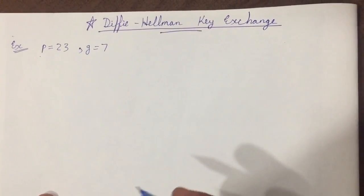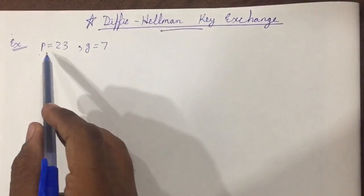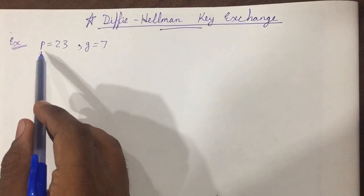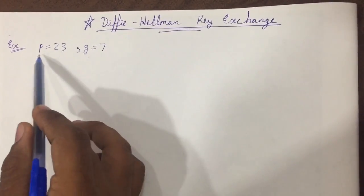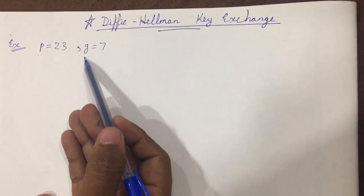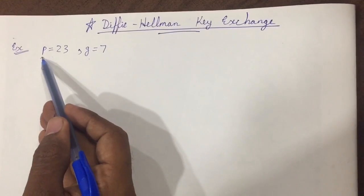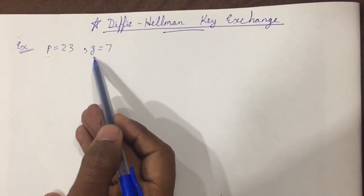Let us try and understand Diffie-Hellman key exchange with an example. In the example we would be provided with p and g values. They might be prime numbers. Here p value is given as 23 and g value is given as 7.